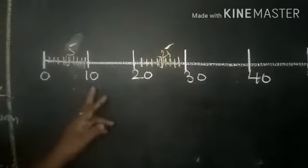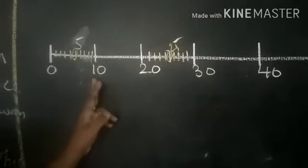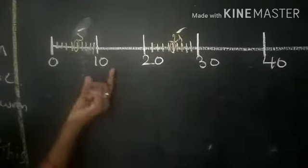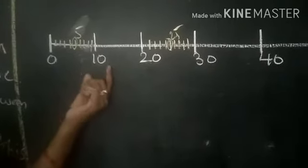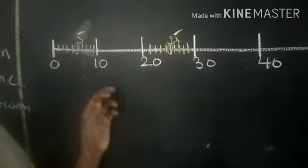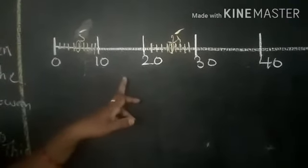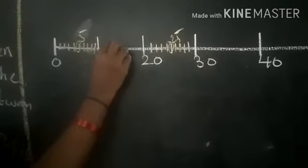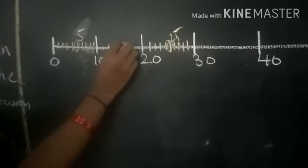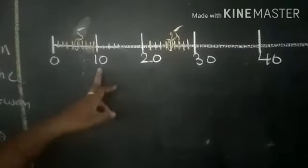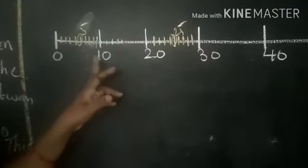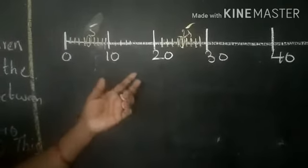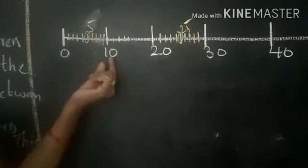If a number is between 10 and 15, then it is closer to 10. What are numbers between 10 and 15? 11, 12, 13, 14 are the between numbers 10 to 15. So all these numbers are closer to 10.